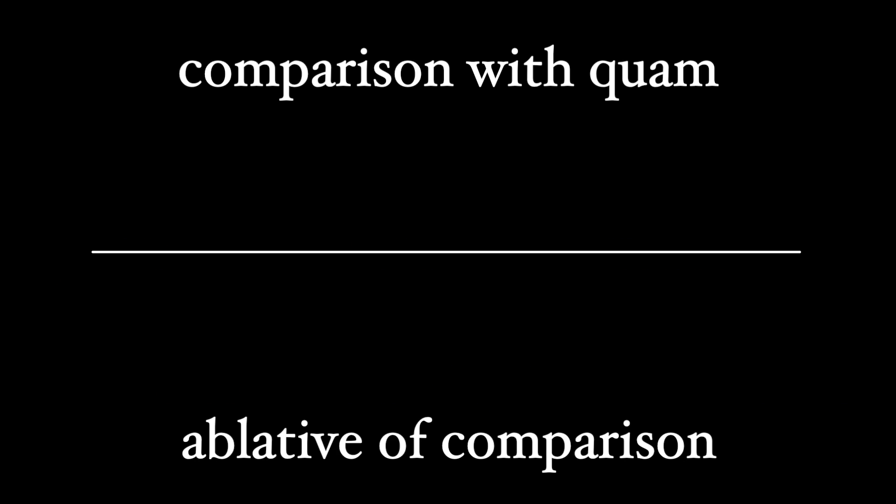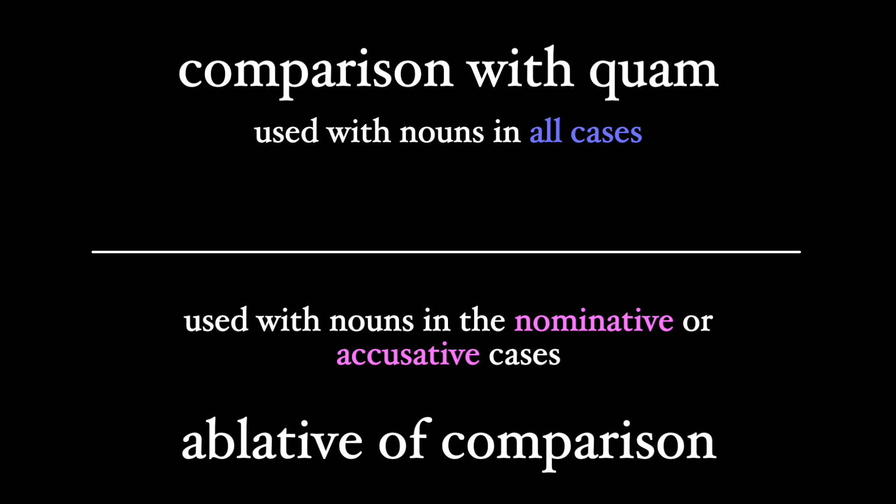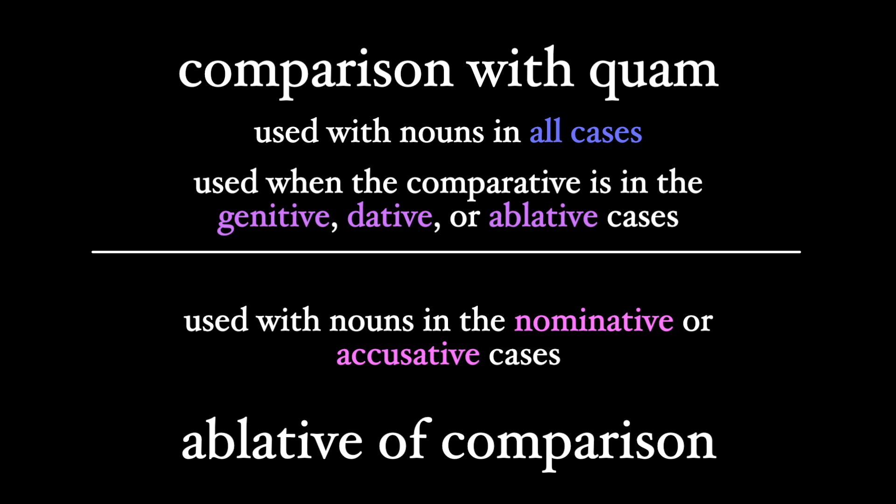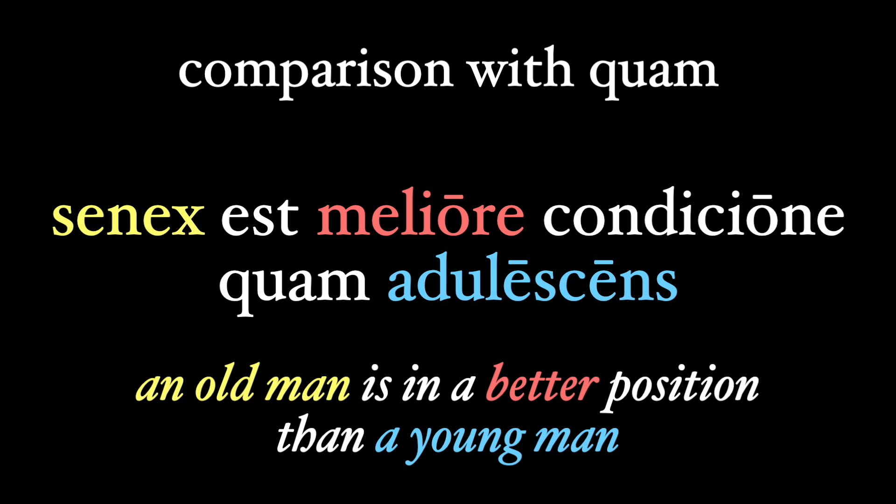The ablative of comparison is only really used with nouns in the nominative or accusative cases, and we have to use quam when our comparative is in the genitive, dative, or ablative — like here. Senex est meliore condicione quam adulescens — an old man is in a better position than a young man. Meliore is in the ablative case, and so we need to use quam here rather than the ablative of comparison.